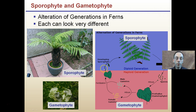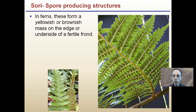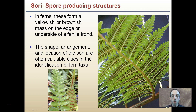These structures can look very different. Ferns are a stark example of alternation of generations. The sporophyte is what we're familiar with — the fronds and leaves — but the gametophyte actually looks quite different, resulting from spores undergoing mitosis. The gametophyte produces male and female gametes that fertilize to develop the sporophyte, which grows into the fern we recognize. Unique to ferns are sori — yellowish-brownish masses on the edge or underside of the frond — which are spore-producing structures and valuable cues for identifying fern species.